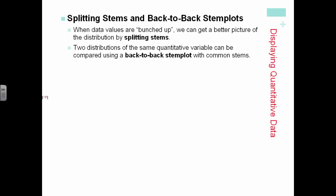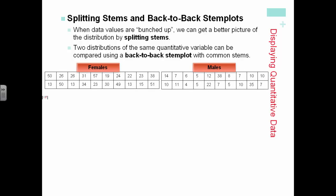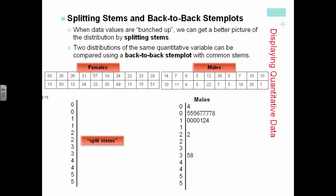We can also use what are called split stems, or we can use what are called back-to-back stem plots. Here's an example of a split stem using the values for males. And we would generally use this again, as it says, when data values are real bunched up.